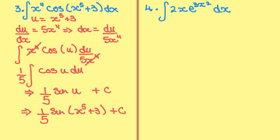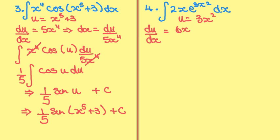Question 4: integrate 2x times e to the power of 3x squared dx. In this case I'm going to let u equal 3x squared. Differentiating gives du/dx equal to 6x. Rearranging for dx gives dx equal to du over 6x.